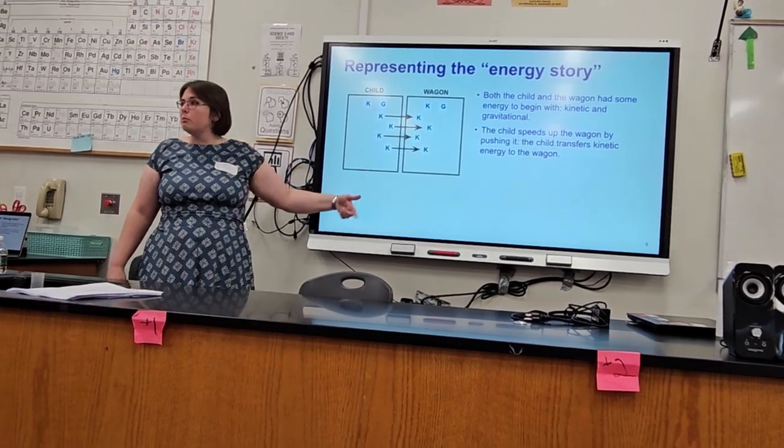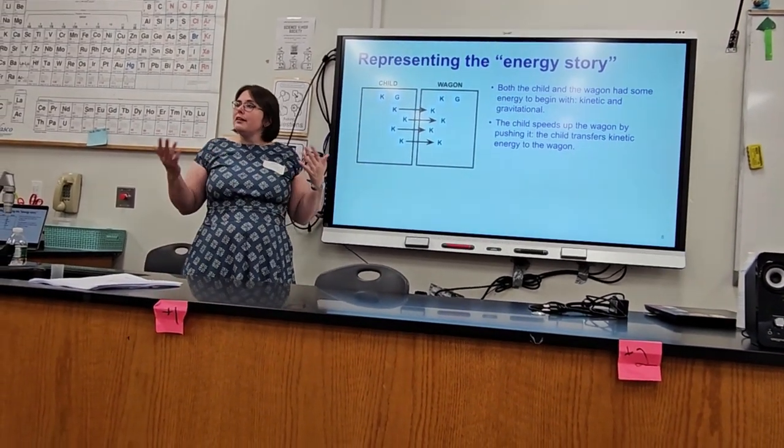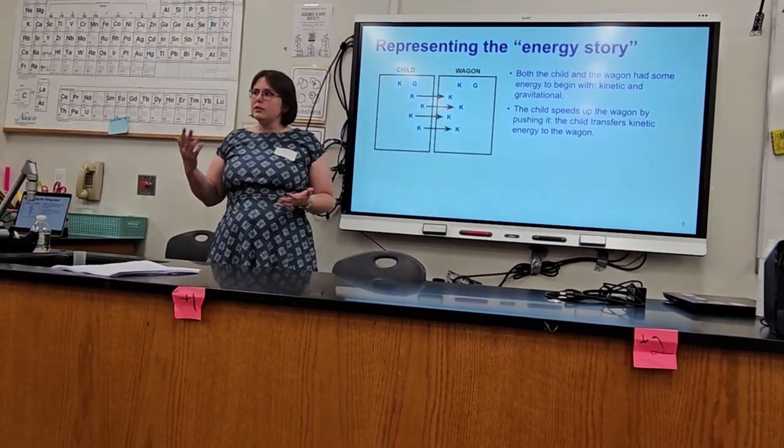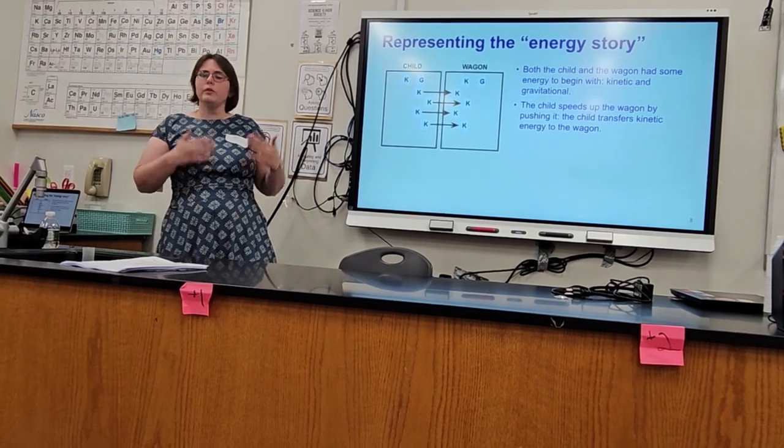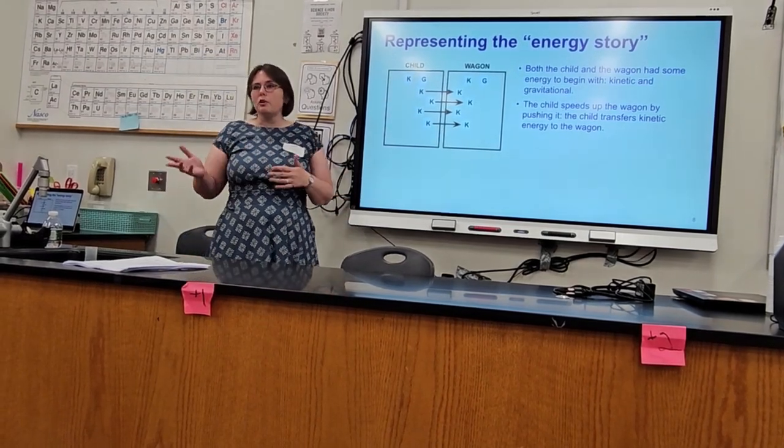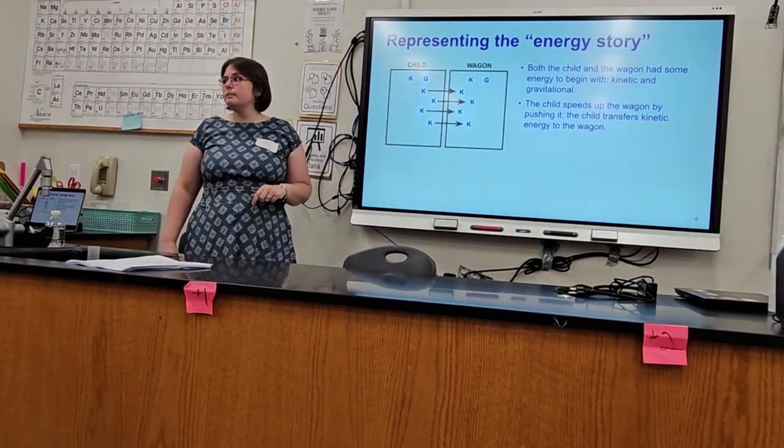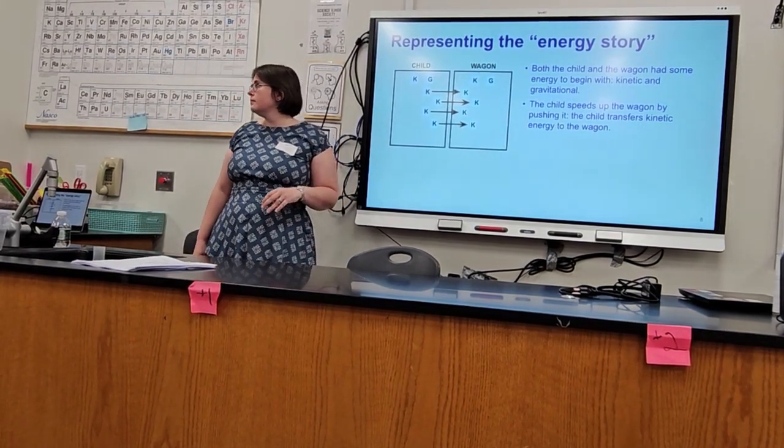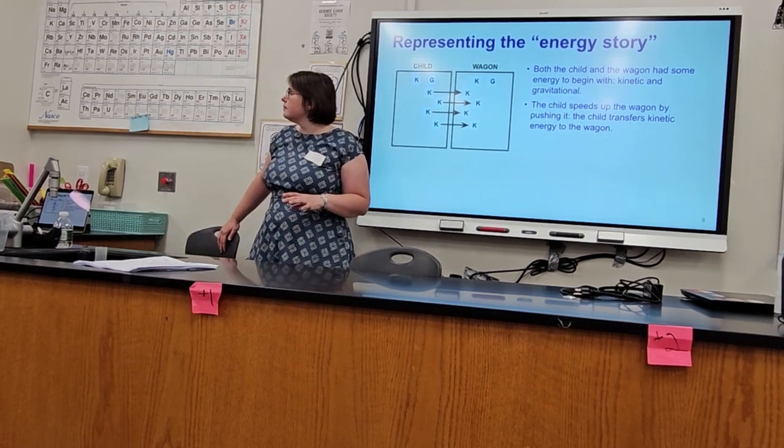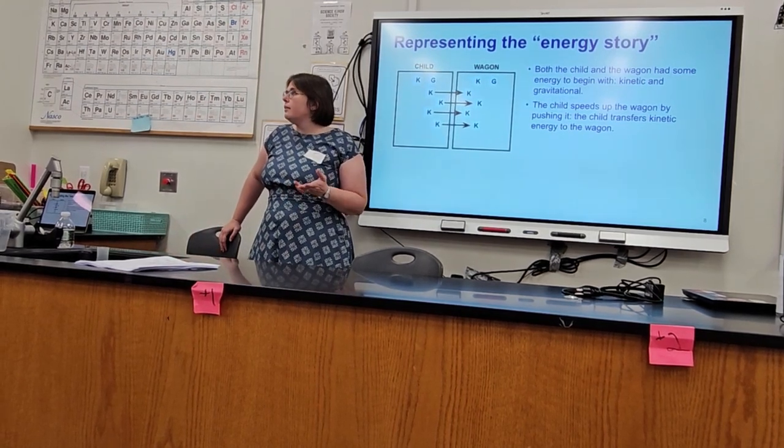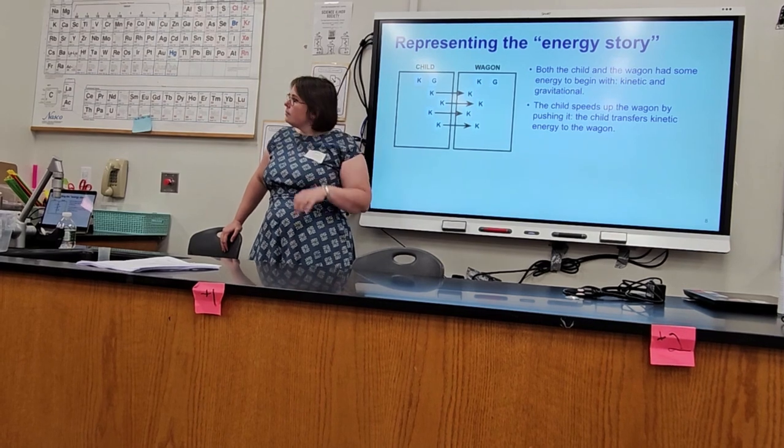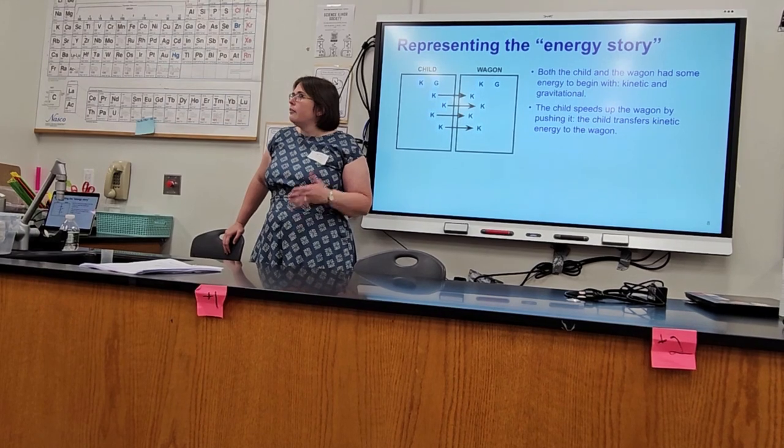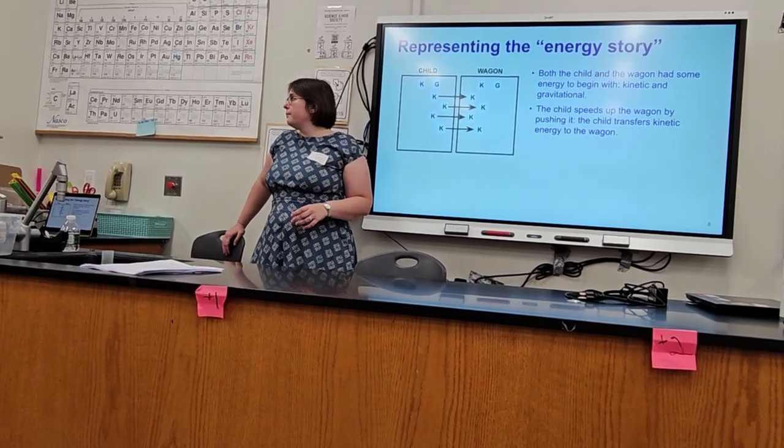The child speeds up the wagon by pushing it. And the child transfers kinetic energy to the wagon. So you can see that the kinetic of the child goes to the kinetic of the wagon. And what's important is the same number of energy blocks that starts with, that's what you end with. You can add things for thermal energy if you want. You can kind of leave it open-ended for the students to come up with that and be like, don't we have to consider friction? And then you're like, okay, so how do you want to do that? So you can keep it simple or more complicated as you wish. And I think the child's energy too, depending on how far back we go.